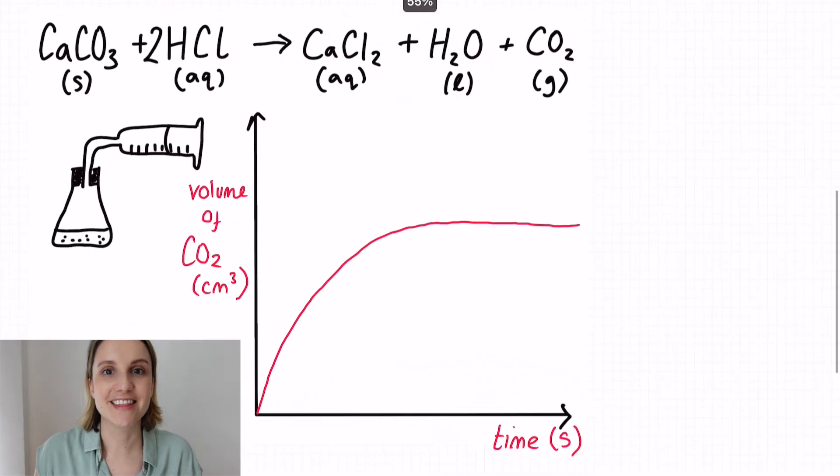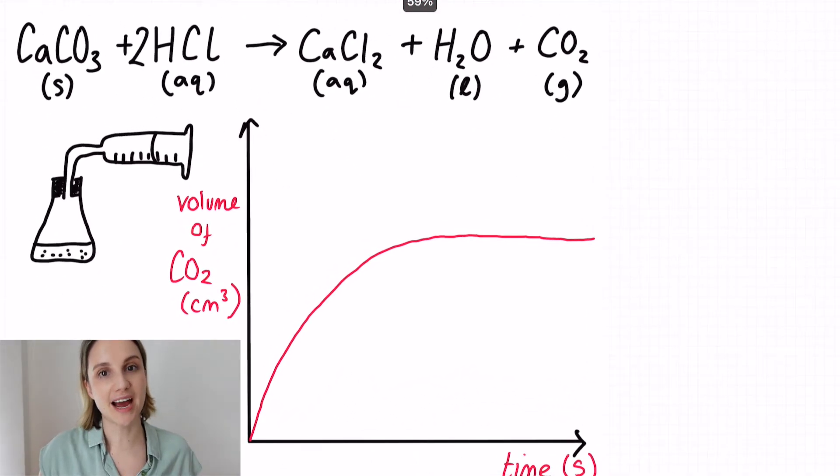In an exam question, they will often tell you which of the reactants is limiting or in excess. You might have to read the words at the top, it's not going to be written on top of the reactants like I've done here. So in mine, I said that the calcium carbonate is limiting, and this means that the HCl is therefore in excess.